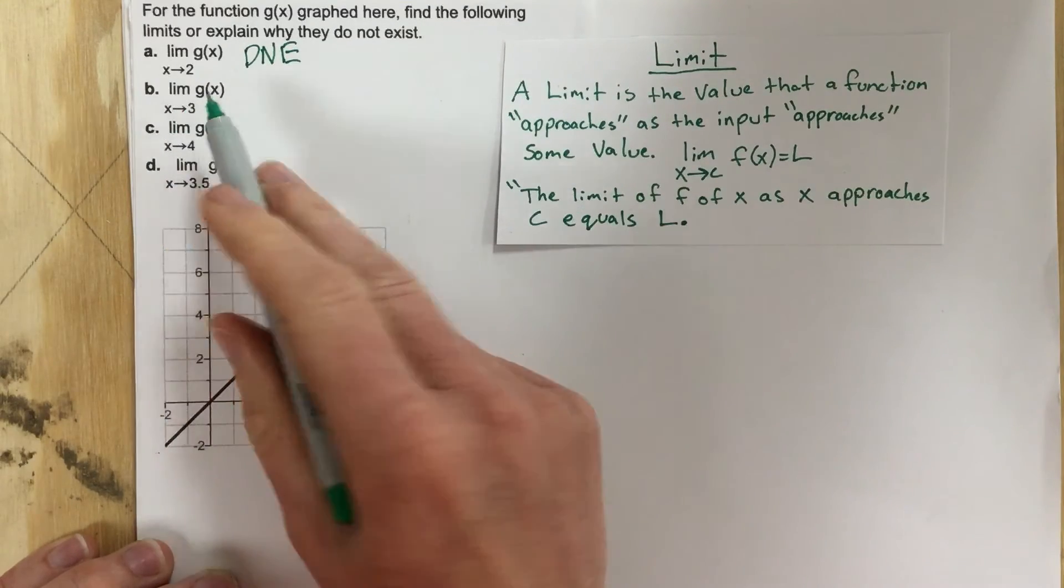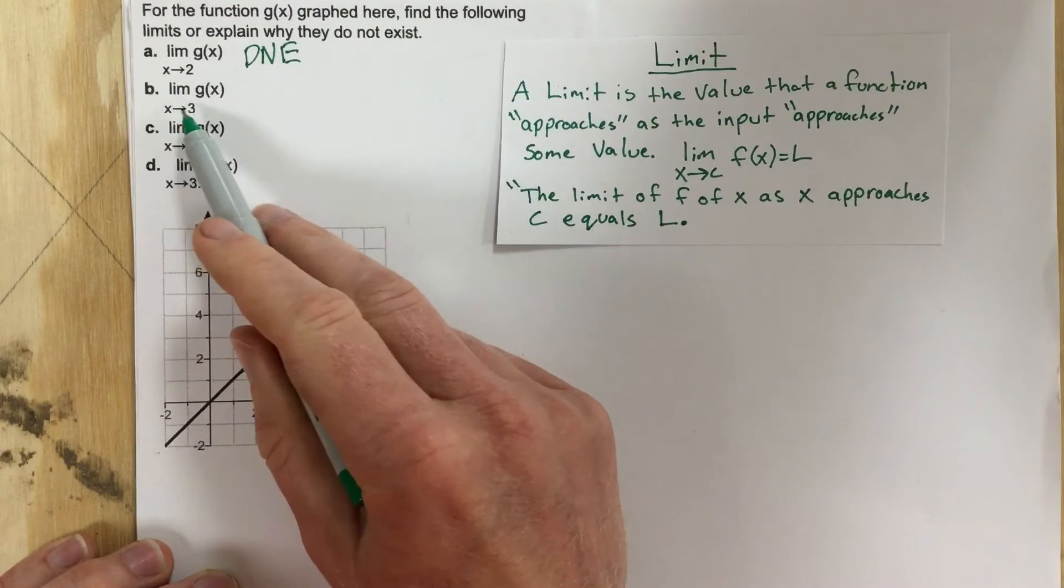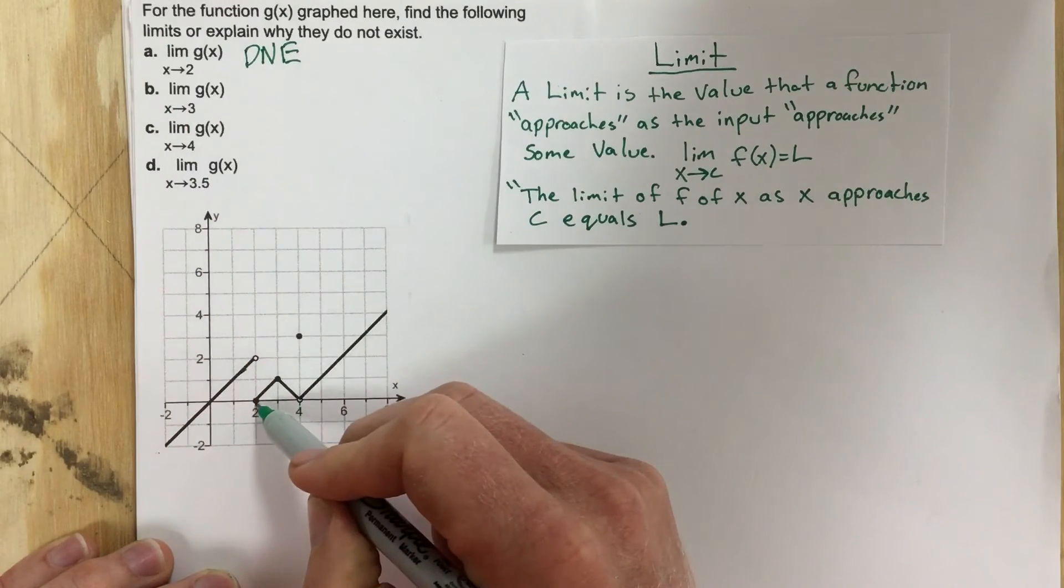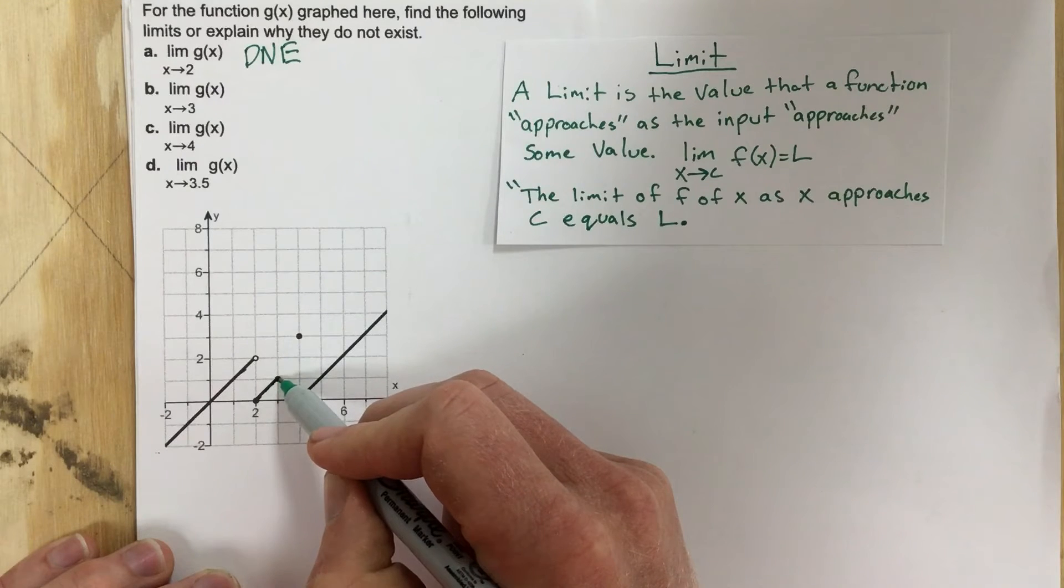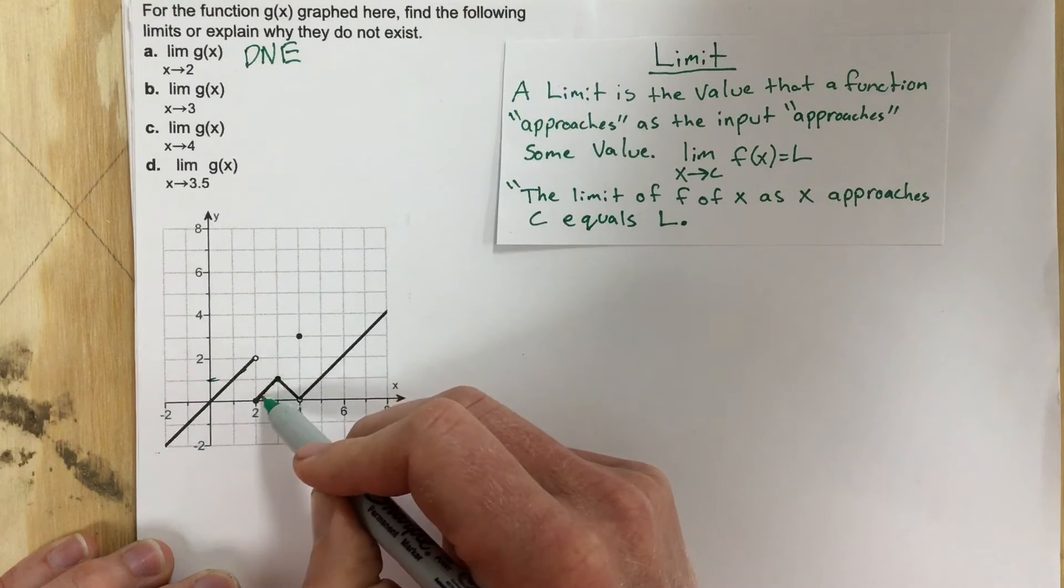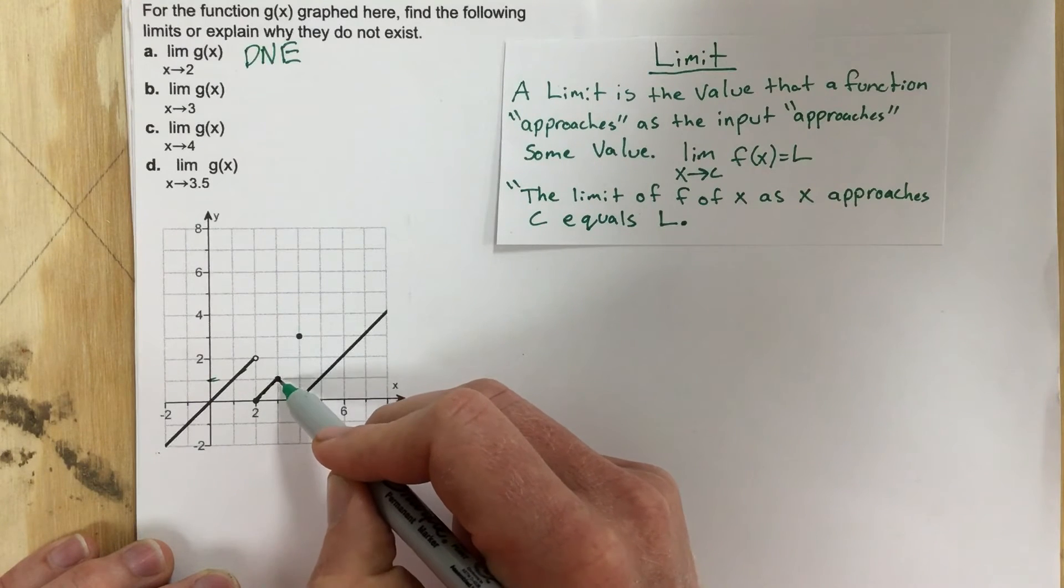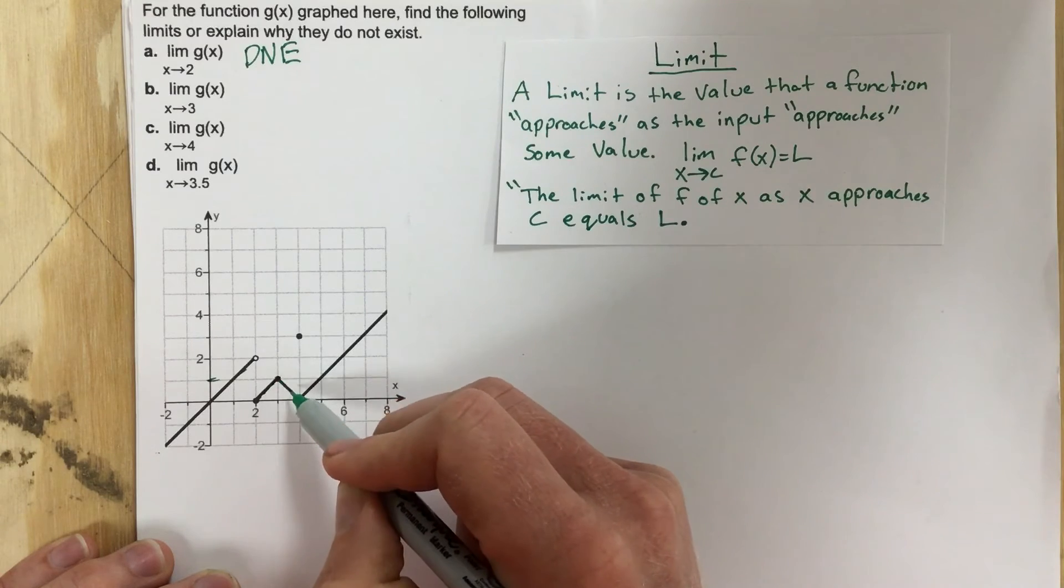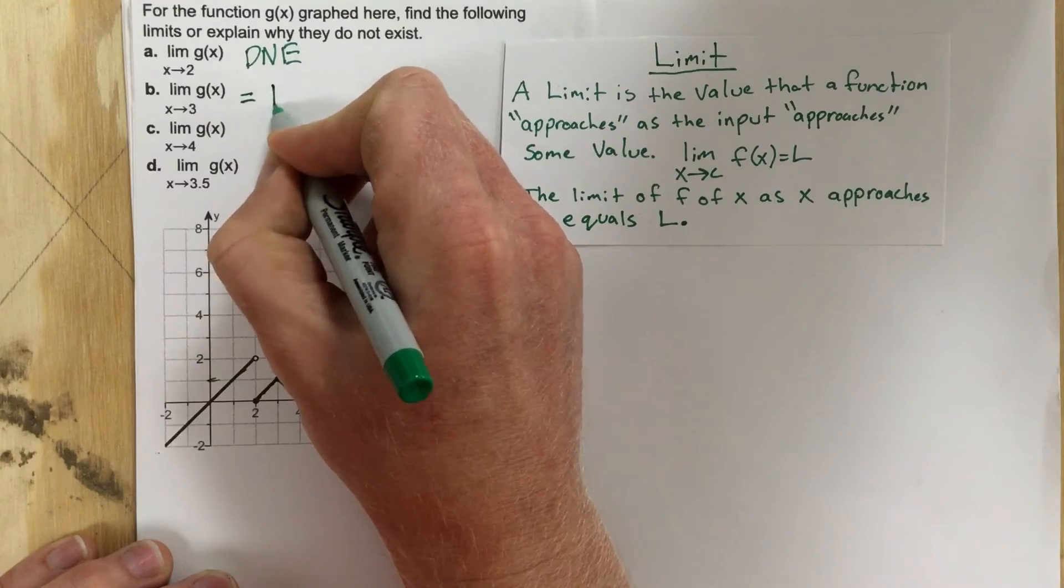Part B, the limit of g of x as x approaches 3. Well, let's look at it as it approaches 3. As it approaches 3 we're getting a y value of 1. So as we approach 3 for an x value, we get a y value of 1 and that's occurring from both sides. And so because it's occurring from both sides, we would say that the limit is equal to 1.